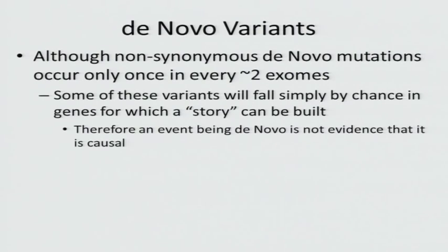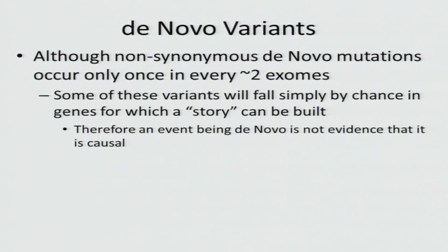How about de novo variants? De novo variants, especially those that are non-synonymous, are very rare. But just by chance, if we look at enough trios, we're going to have variants that fall within genes where it's easy to build a story about that gene being involved in disease etiology. I don't think that when you have a de novo event, that evidence on its own is enough to say that a variant is causal.